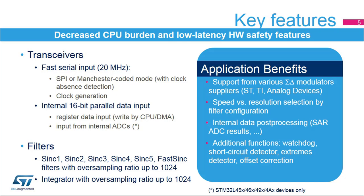Filters are the core of the DF-SDM function. They perform 1-bit stream filtering to provide higher output resolution at lower speeds. There is an additional integrator behind the digital filter, which provides additional data averaging. Applications can be designed with various types of sigma-delta modulators from various vendors. The parallel data input feature can perform post-processing of any internal data, for example internal ADC streams, audio data filtering, etc.